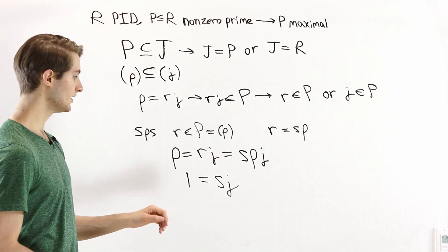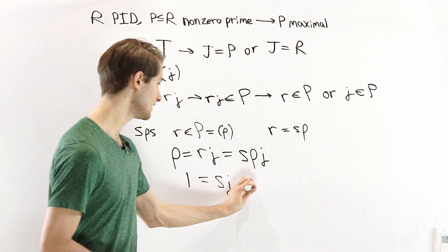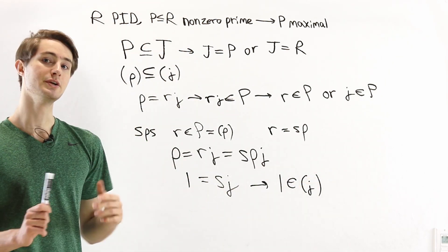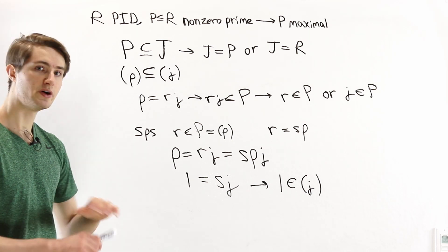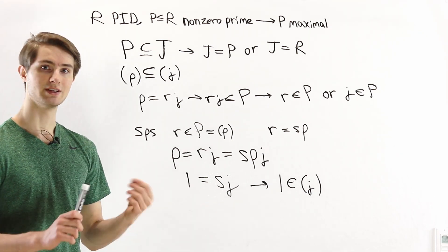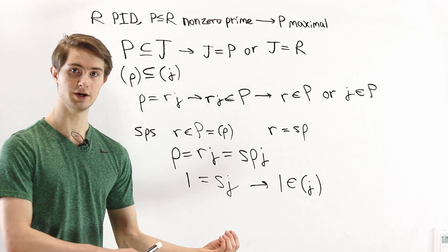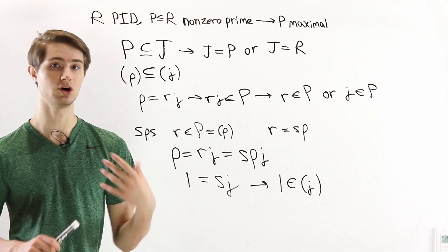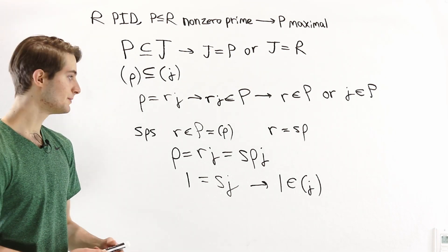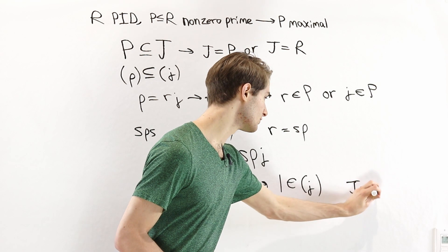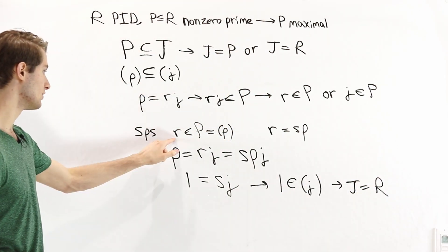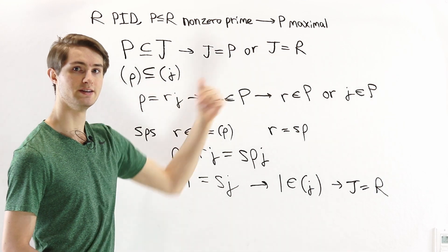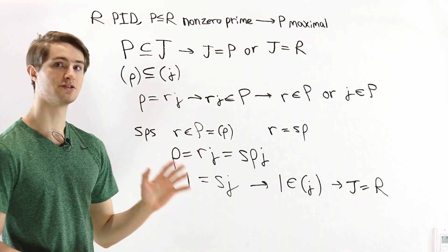This equation tells us that 1 is a multiple of j, meaning 1 is an element of the ideal generated by J. Since ideals are closed under multiplication, for any element T in the ring we can write T as T times 1. So if 1 is in the ideal generated by J, every element of the ring is also in that ideal, which means J equals the entire ring R. This is the other possibility for the condition of a maximal ideal, and therefore we've satisfied both cases.